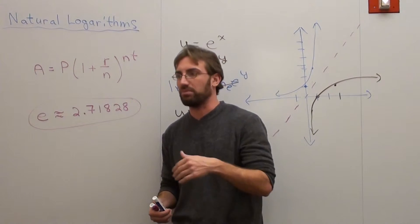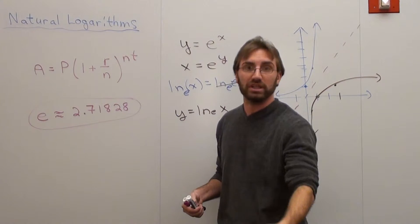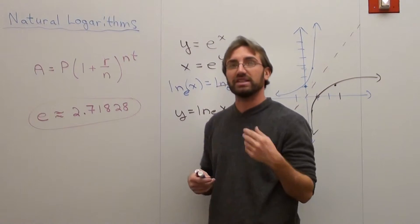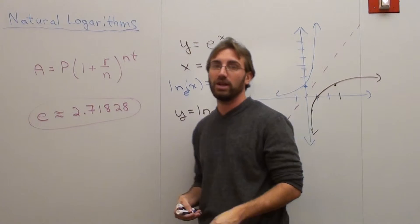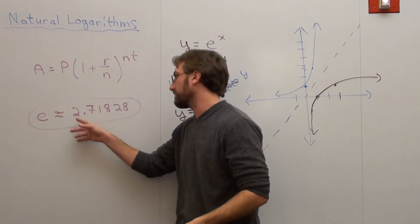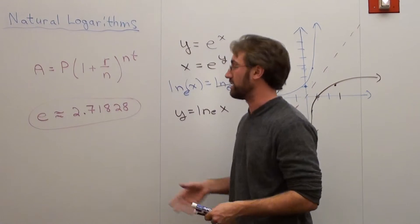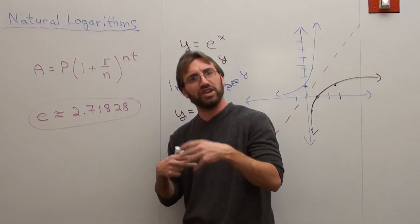And if you compound it monthly, even more. Daily, even more. Hourly, even more. Every minute, even more. If you compound it continuously, it's always compounded over and over and over again. What happens is you get approximately $2.71828 and so on. And basically what it is, is it's a self-efficient function.